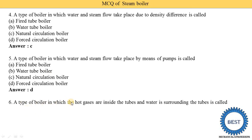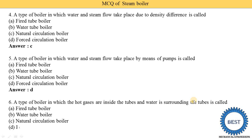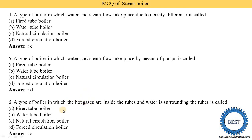A type of boiler in which hot gases are inside the tube and water surrounds the tube is called option A — fire tube boiler. The key thing to remember is what is inside: here hot gases are inside, so it is called a fire tube boiler. Option A is correct.